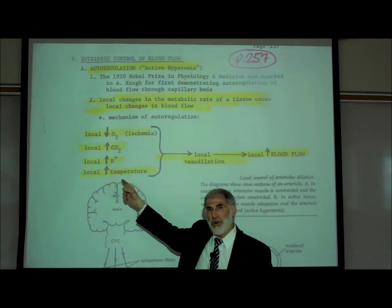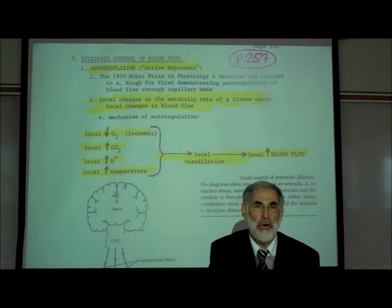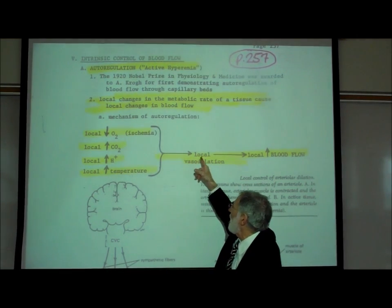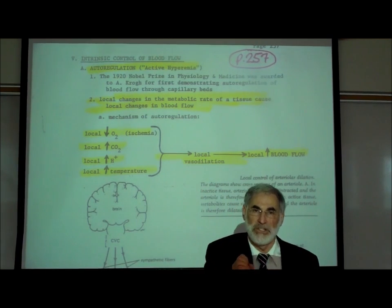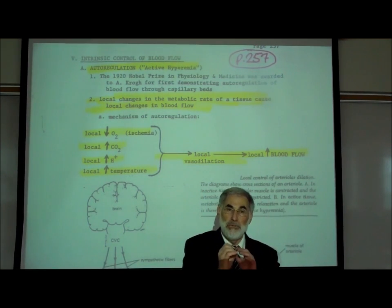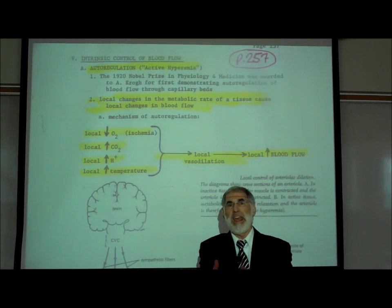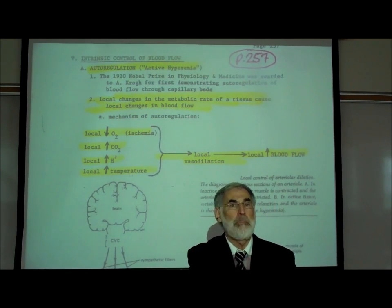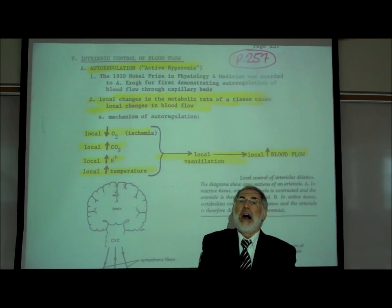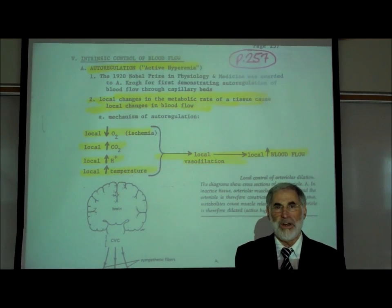Conversely, if the temperature were to decrease, if you immersed your hands in icy cold water, that would cause the exact opposite to occur. That would cause local vasoconstriction causing a reduction in the flow of red blood to your hands. And the result is that your hands would look all pale, pallid, blue, because of a decrease in blood flow to your hands.